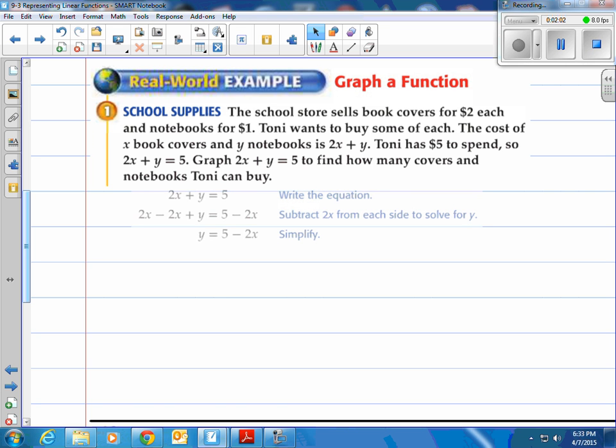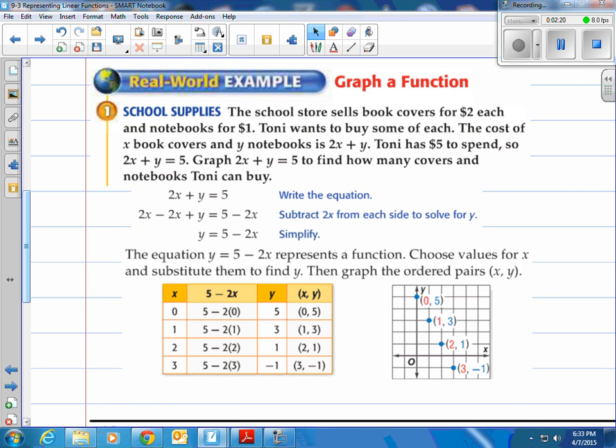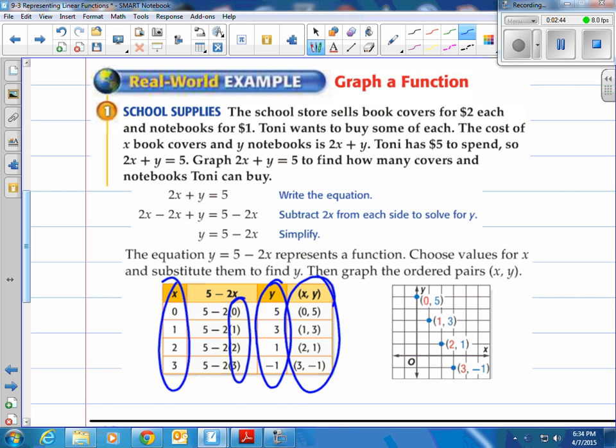Graph 2x plus y equals 5 to find how many covers and notebooks Toni can buy. Now this is a little bit more in depth but what they do is they take the equation here and they solve it for y. That makes it simpler for us to create a table. So that's what they do for you. You notice they've modified 2x plus y equals 5, subtracted 2x from both sides and now they have y equals 5 minus 2x. Then they create a table. It says the equation y equals 5 minus 2x represents a function. Choose values for x and substitute them in to find y. So you're making up your x values and just plugging them into this equation and finding your corresponding y values. If you can't see that that's right here. So you take your x values plug them in and there they're plugging them in right there and then you get your corresponding y values and you put them together for your ordered pair and then of course you go over here and you graph them and there they are.